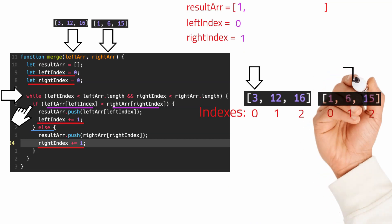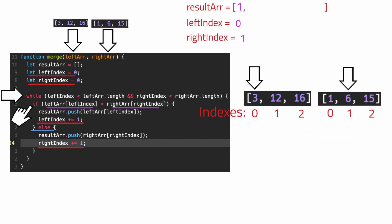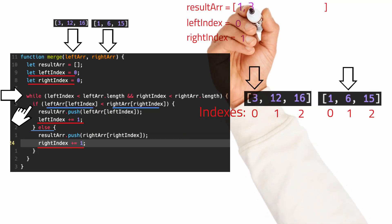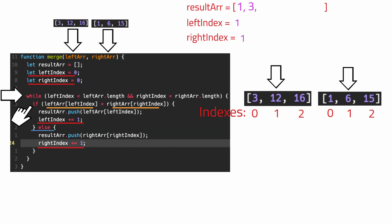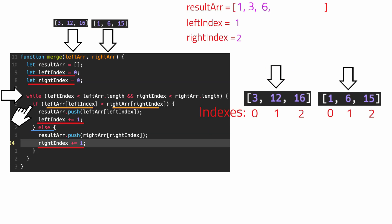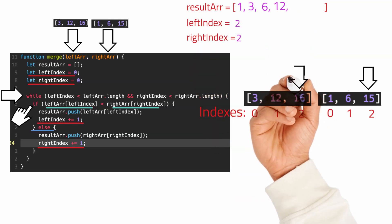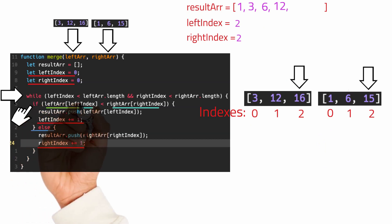And then once again we do our comparison at the top of the loop. Is three less than six? Yes — so we push three onto our result array and increment our left array index. Back to the top of the loop: is 12 less than six? No — so we push six to the result array and increment the right index. Is 12 less than 15? Yes — so we push 12 from the left array and increment the left index. Now is 16 less than 15? No — so we push 15 from the right array and increment the right index.